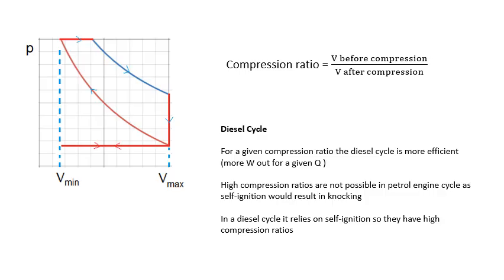I mentioned the compression ratio. The compression ratio is basically the volume of the gas before divided by after compression. In a diesel cycle it is much bigger. In a petrol engine the compression ratio is maybe eight or nine; in a diesel engine it's maybe between 15 and 20. It needs to be larger so that it gets hot enough for self-ignition to occur. For a given compression ratio, the diesel cycle is more efficient — we get more work out for a given amount of Q in. The thermal efficiency is better.